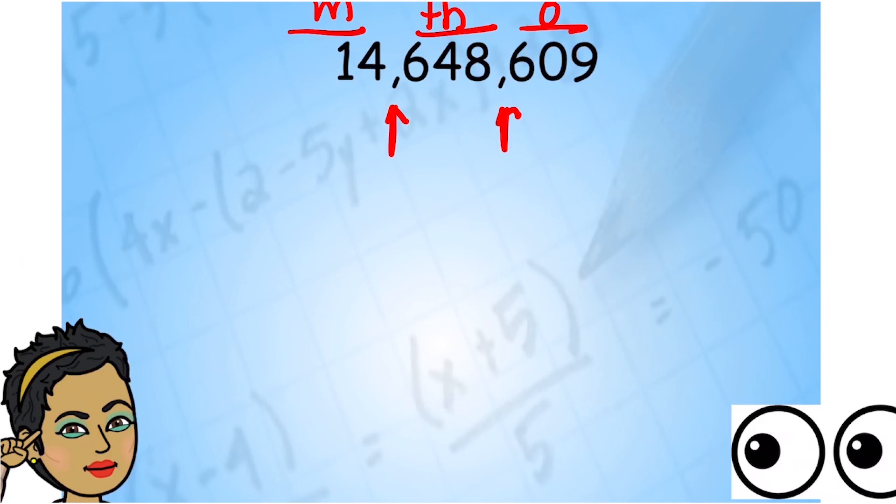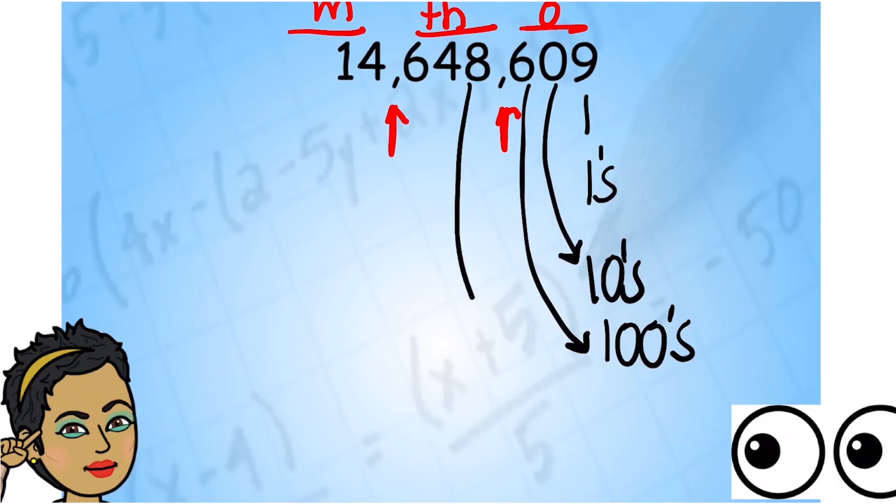So in this ones place, we have ones. Actually, let's write that one down. We have ones, tens, and we have hundreds. And the same thing goes in the thousands system.